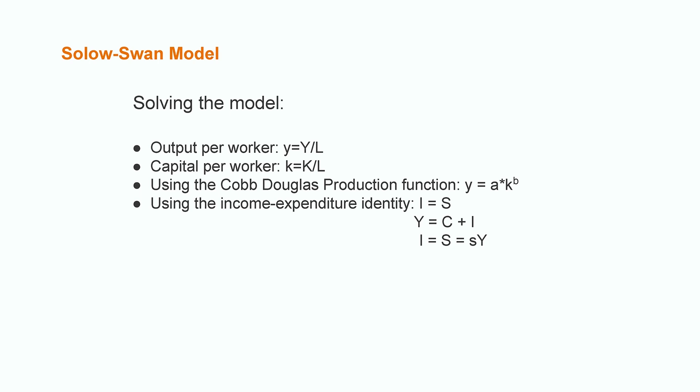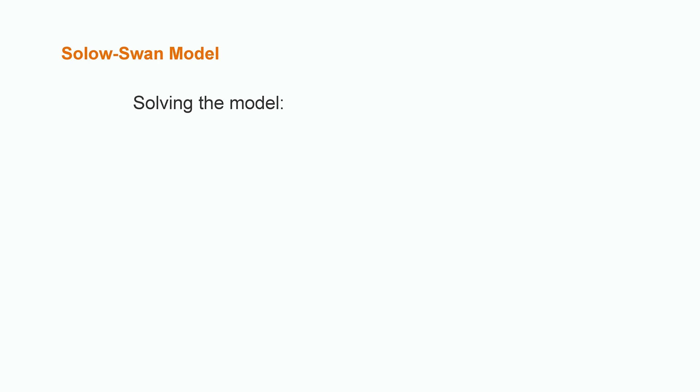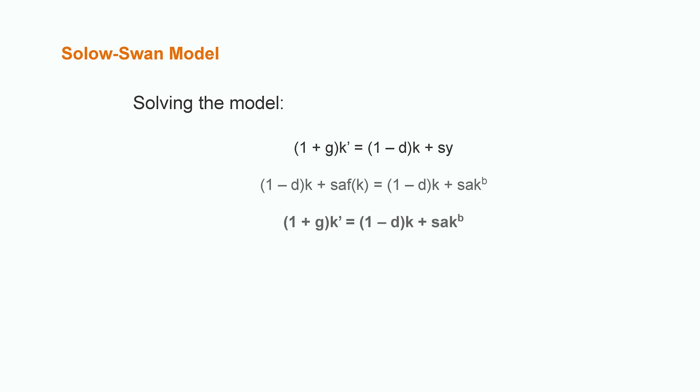First, the consumer's budget constraint: income equals what we consume and what we save. And also, that investment is S multiplied by Y because it equals savings. So we replace that in the capital accumulation equation. Now we put everything together using the capital accumulation function. In order to express it per worker, we add up the population growth rate and replace output per worker with the production function.